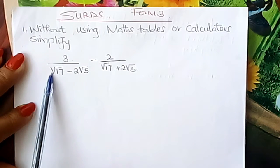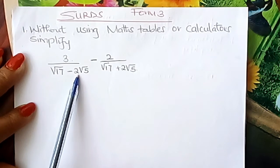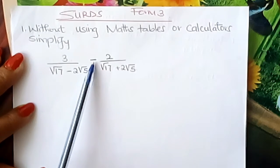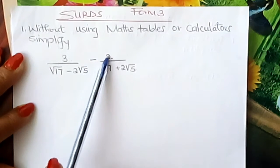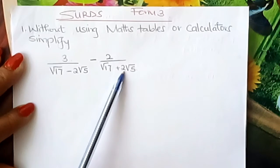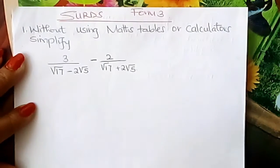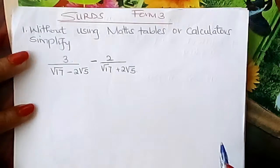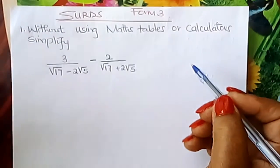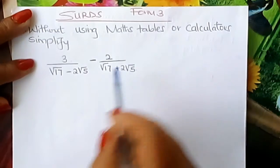The expression is: 3 over (root 17 minus 2 root 5) minus 2 over (root 17 plus 2 root 5). How do you simplify this? There are two methods but I'll show you an easier one.